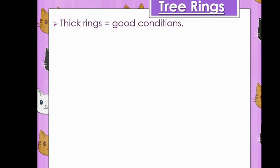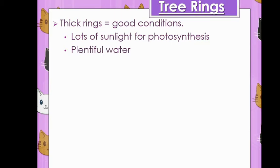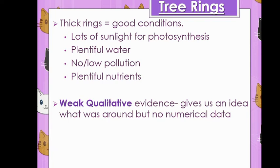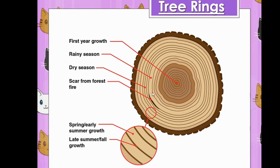What do we mean by good conditions? We mean the factors needed for photosynthesis and growth in plants. So lots of sunlight and photosynthesis, plentiful water but not too much because if there's too much that will lead to mould growing and it will damage the tree and become weak. Little pollution or no pollution and plentiful nutrients. Tree rings is an example of weak qualitative evidence. So this is a higher level skill, being able to categorise the type of evidence you have got. This is qualitative evidence because it gives us an idea of what's there but it doesn't actually give us any numbers.